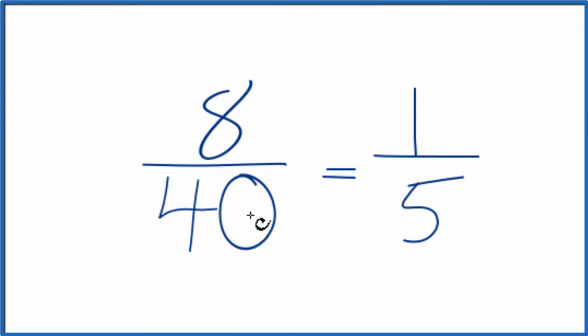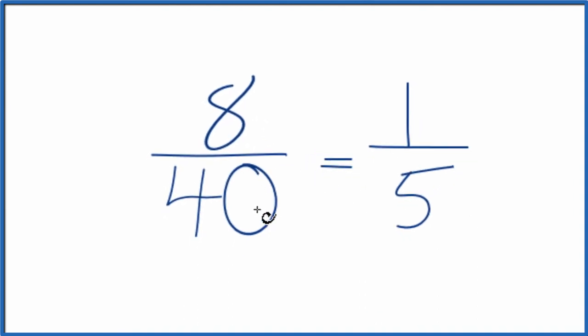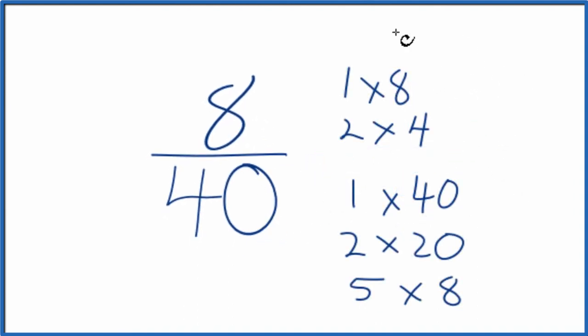You would have simplified 8 fortieths down to 1 fifth, and you can't reduce that any further. You could also list the factors for 8 and 40, like this. Then you look at the factors for 8 and 40, and you'd see that the greatest common factor is 8.